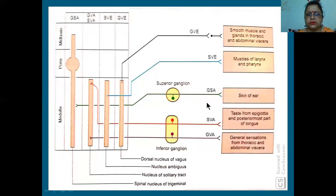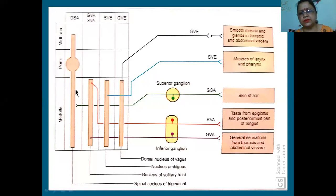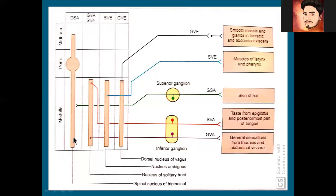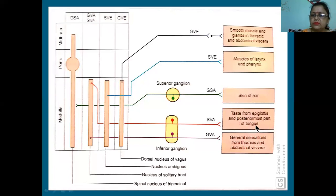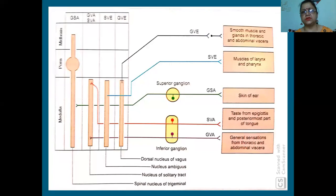One branch comes to the ear from the vagus - that is the superior ganglion, related to the trigeminal. Taste from the epiglottis and posterior-most part of the tongue - as I told you in the tongue class, most of the posterior part of the tongue and epiglottis is supplied by the superior laryngeal nerve, because it is developed from the fourth arch.